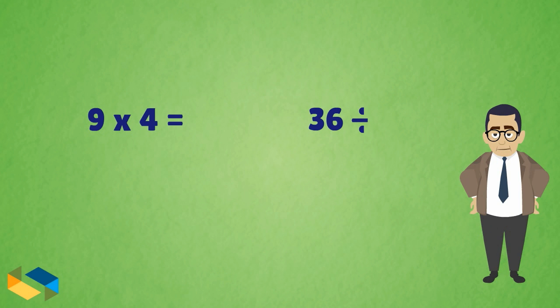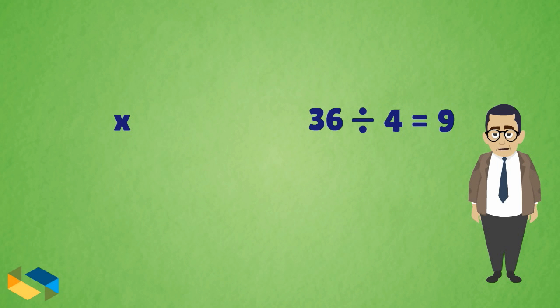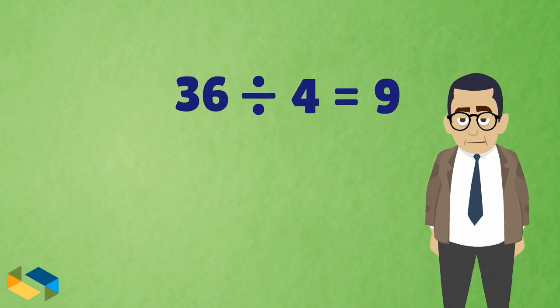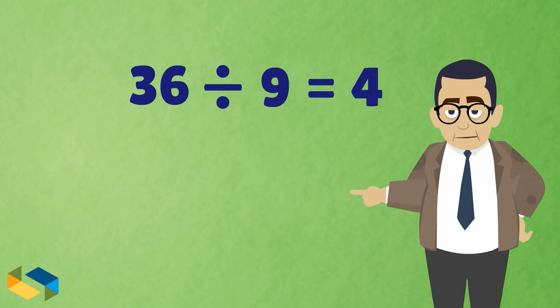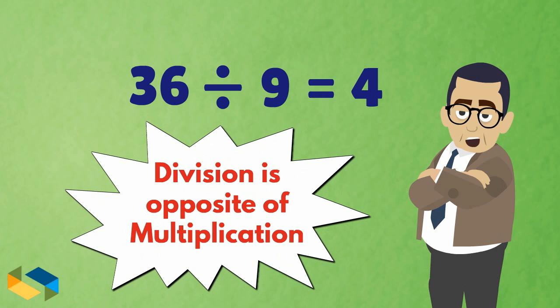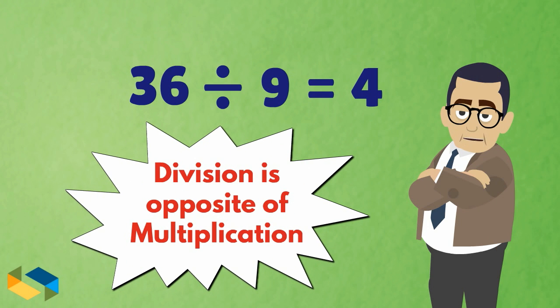When we divide the number 36 with one of the factors, say 4, we get the answer as the other factor, which is 9. The other way round is true as well. Hence, we can say that division is opposite of multiplication.